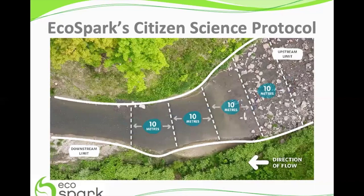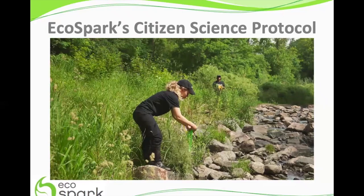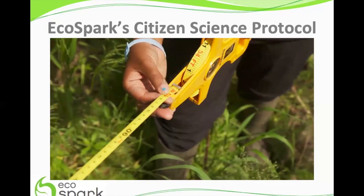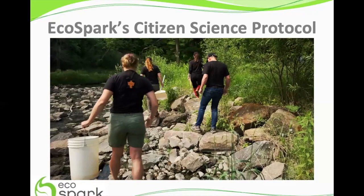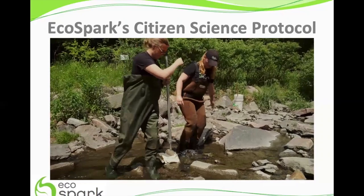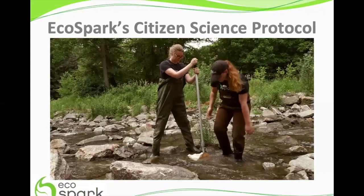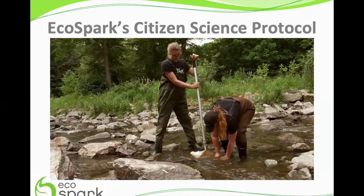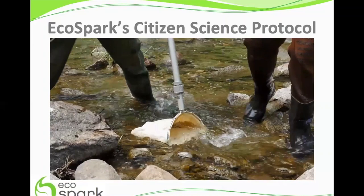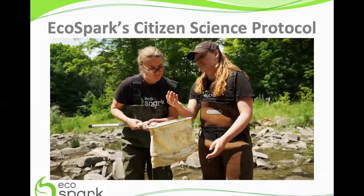Once the correct number of transects have been identified, use flagging tape to tie on nearby shrubs or plants along the stream bank to identify each transect. Use a measuring tape to measure the correct distance between each transect. When collecting your sample, always start at your most downstream transect and work your way upstream. Two people in waders will enter the water — one person will hold the net facing upstream closest to the shoreline they entered, while the other person will act as the kicker or dancer in front of the net. Their role is to kick the substrate in front of the net for 10 to 15 seconds, loosening the bugs and flowing them into the net. Once complete, the net holder will move the net one net length across and repeat this process until reaching the other bank. Once at the shoreline, the net holder will carefully scoop the net upstream to ensure they don't lose any of their sample.